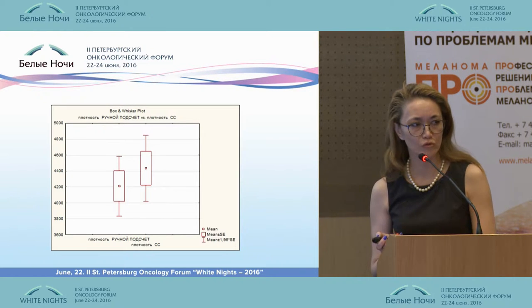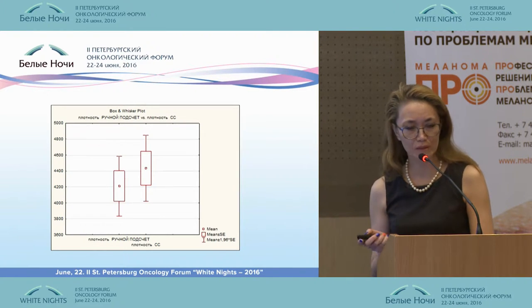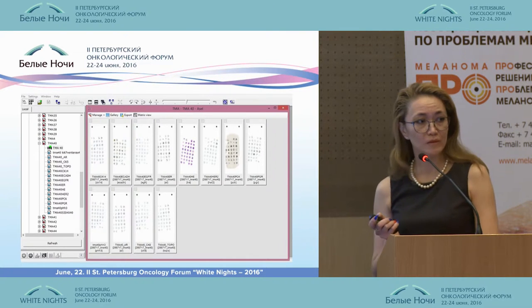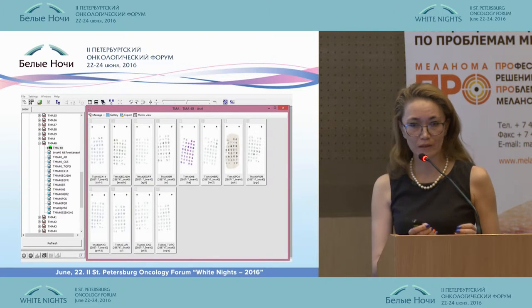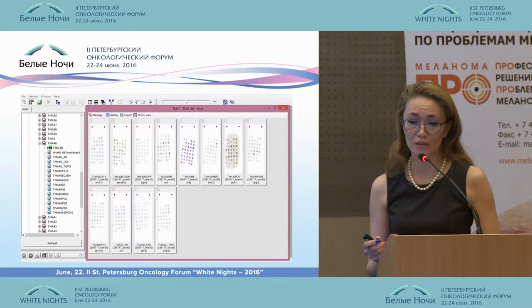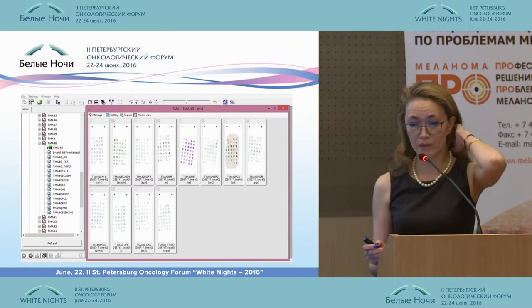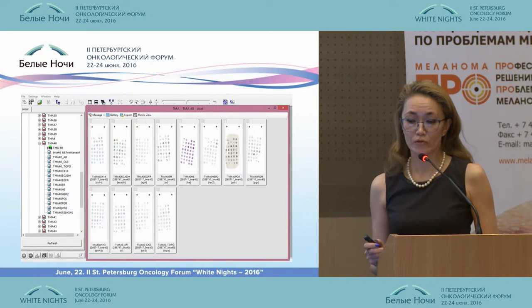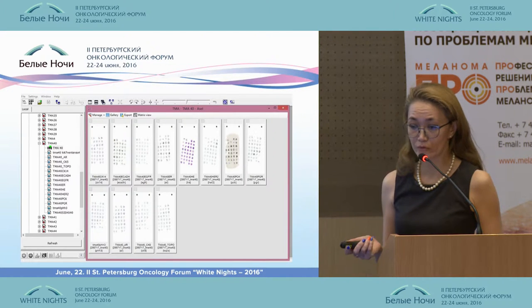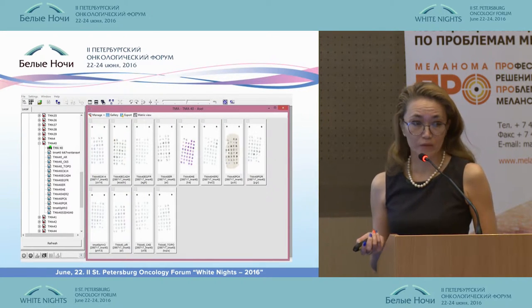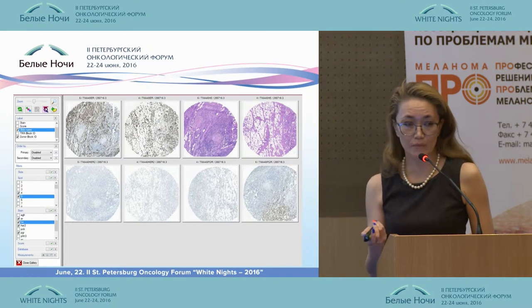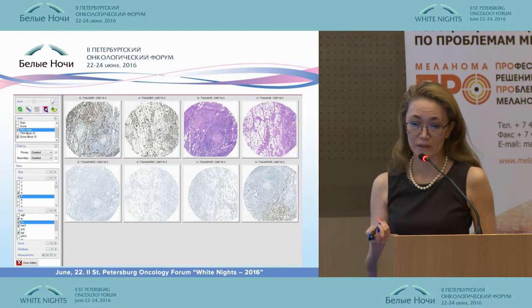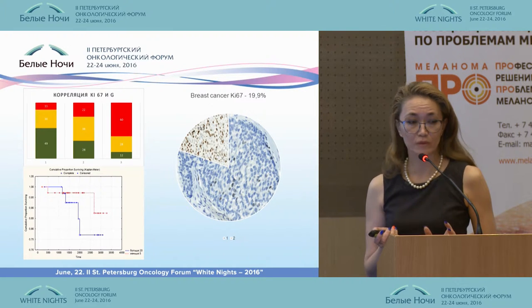Unless we are sure that the machine calculates correctly, we are not allowed to go further. When we reached the exact matching of the manual and automatic results, we followed the research with the use of TC metrics. This was a large research involving over 1,000 breast cancer cases and over 18 markers.